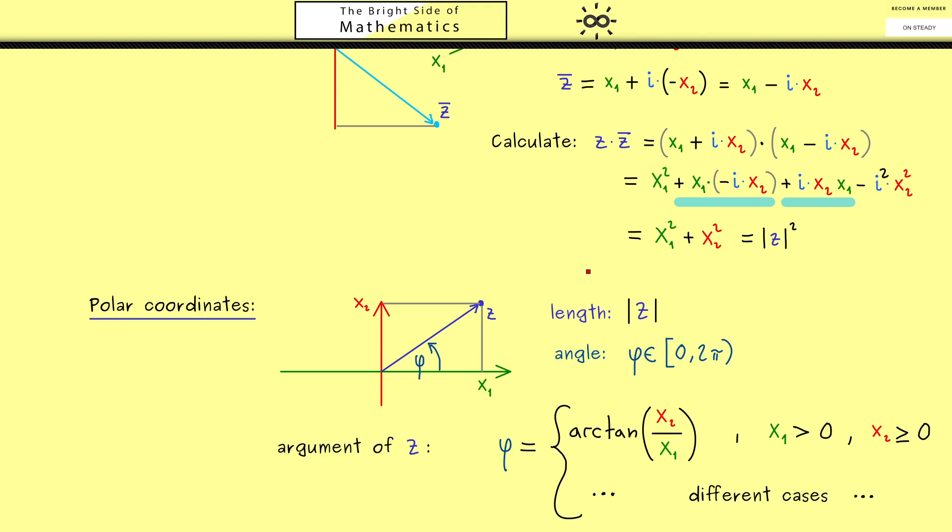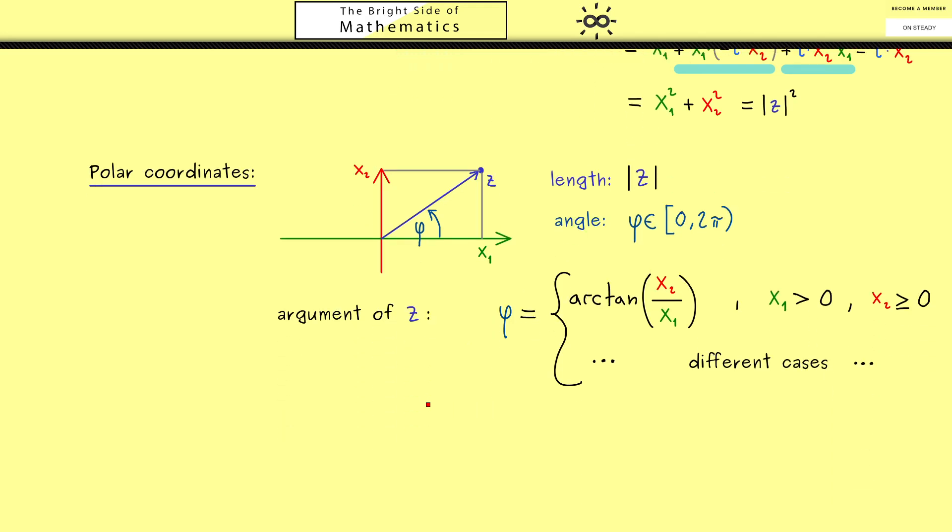Now with these two pieces of information we can write down the complex number in a different form. So you already know you can write down the complex number as x₁ plus ix₂ as before. But now we can also say it's the length times the cosine of the angle φ. Because this gives us the part on the x axis so x₁ plus i times sine of our angle φ. Simply because together with the length this gives us the part on the y axis so ix₂. Okay so this is the complex numbers using polar coordinates. Because here you just need to know the length and the angle to get the whole complex number out.